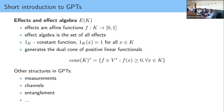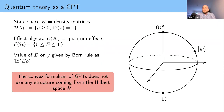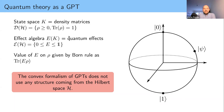To motivate that quantum theory is a GPT: the state space is the density matrices — positive semi-definite operators with trace one, where trace-one is the normalization picking the basis in the cone of positive semi-definite matrices. The effect algebra is given by operators between zero and one, which are exactly what we build POVMs out of. The value of an effect on a state is given by the Born rule — we just trace them against each other. This gives you quantum theory as a GPT.